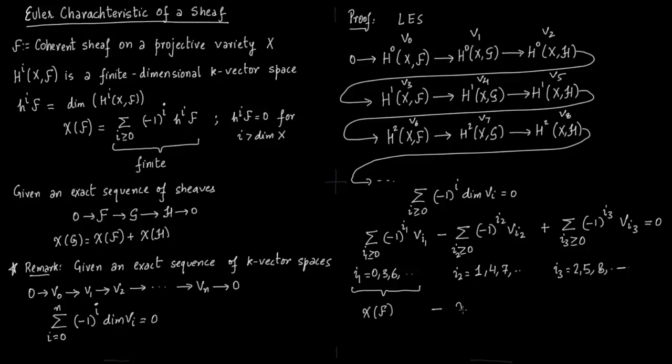So this i_1 is nothing but Euler characteristic of F. This i_2 will lead to Euler characteristic of G. This is Euler characteristic of H and sum of all three is 0.